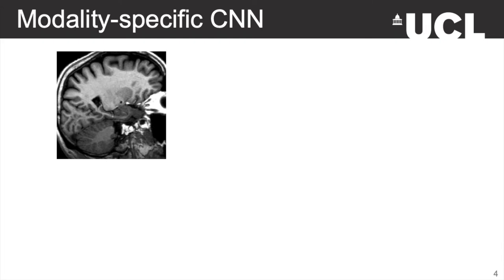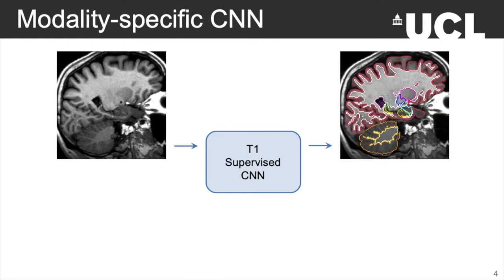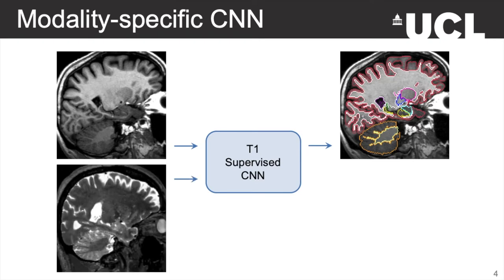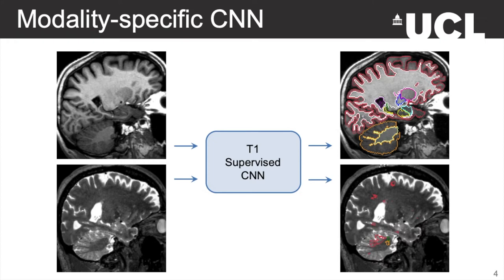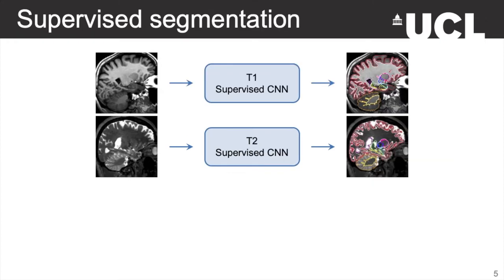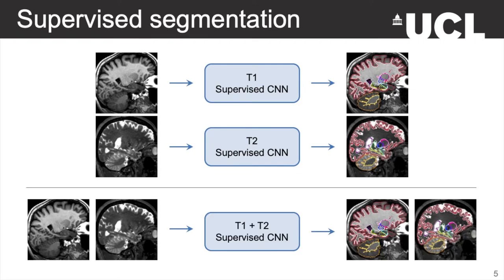As an example, if you take a T1 image and run it through a network that was trained on T1 images in a supervised fashion, you obtain a good segmentation. But if you take an image of another modality, for example a T2, and run it through the same network, you obtain a segmentation of poor quality. A first solution would be to train a different model for each modality, and this can be extended by combining all those models into a single one trained on all available contrasts.